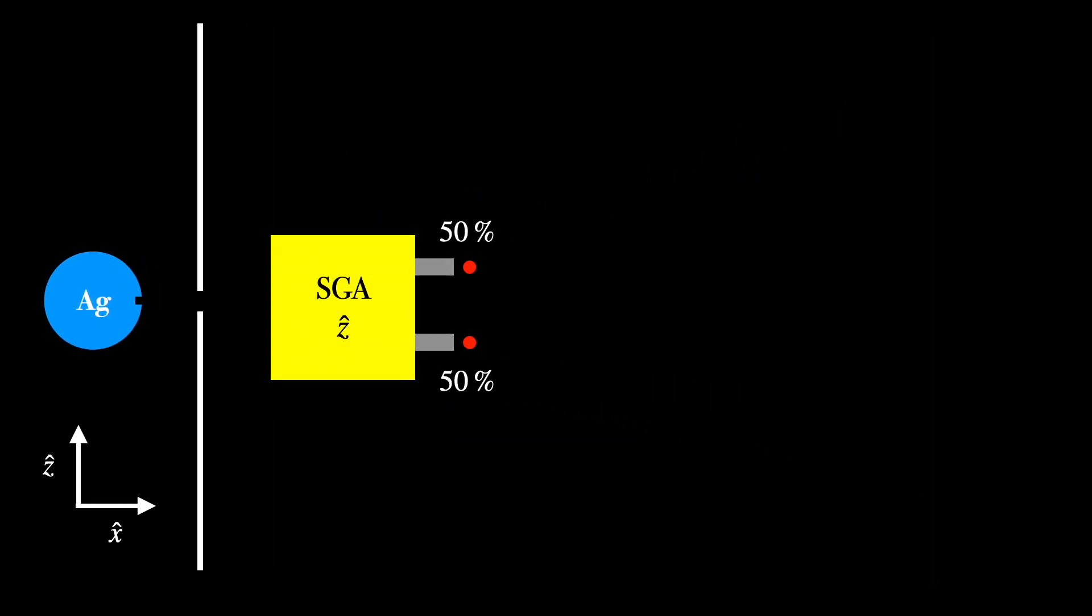We'll represent the two possible results as z up or z down. So the atoms from the oven will go into the Stern-Gerlach apparatus and come out either as z up or z down.